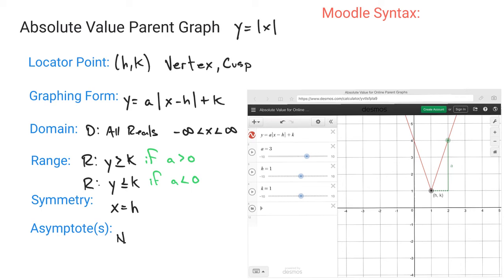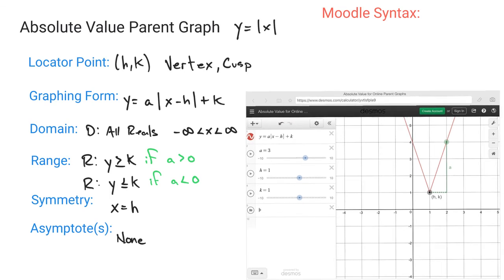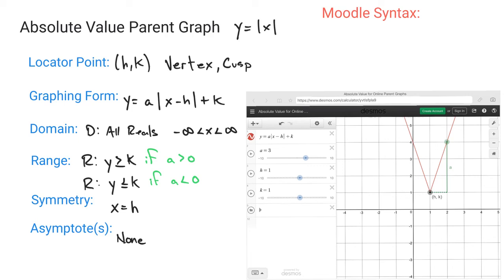And there is not any asymptotes here, because we're not tending towards one particular value. So you have your A, you have your H, and your K. H is always, just like it was for the parabola, what happens when you move your locator point left and right. K is always what happens when you move your locator point up and down.